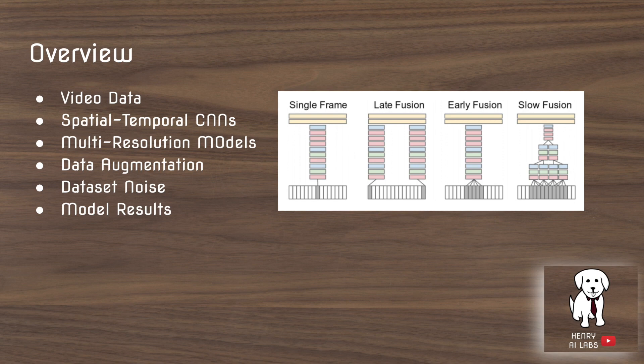First we're going to talk about video data, what makes collecting video data so challenging, and why each individual instance is so large in file size. Then we'll talk about the spatial temporal CNNs, pictured here, that are presented in the paper.